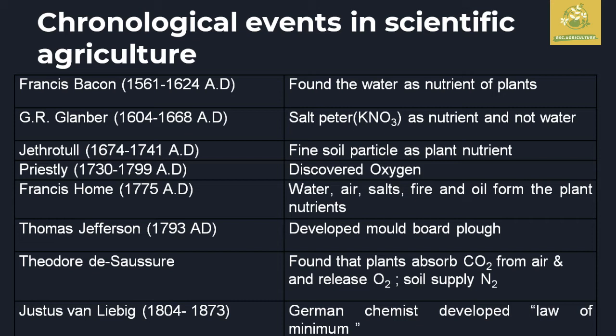Each scientist gave different chronological events during that period, so we must refer to each one. Thomas Jefferson developed the moldboard plow. De Saussure found that plants absorb CO2 from air and release O2, and that soil supplies nitrogen for the plant. Justus von Liebig, a German scientist, developed the Law of Minimum — an important point for our exams.